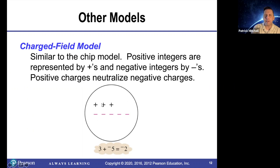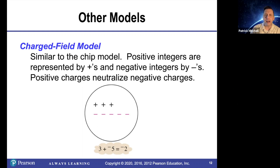You have the three pluses and the five minuses. Imagine that these cancel each other out and just leave you the two minuses. So that's an illustration of why three plus negative five is negative two.